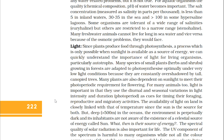The spectral quality of solar radiation is also important for life. The UV component of the spectrum is harmful to many organisms, while not all color components of the visible spectrum are available for marine plants living at different depths of the ocean. Among the red, green, and brown algae that inhabit the sea, which is likely to be found in the deepest waters? Why?